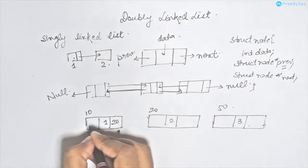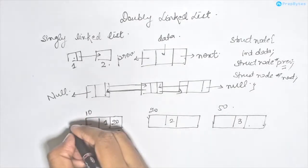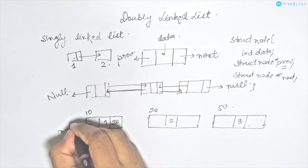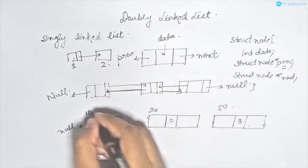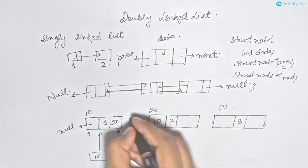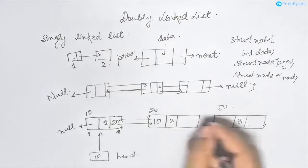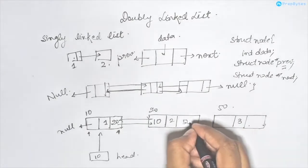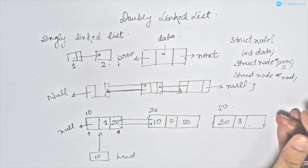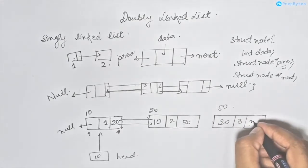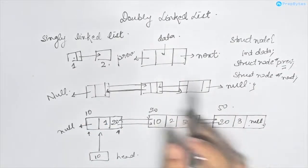So what will the next pointer of the first node have? 20. Since this is the first node, it has no previous element, so it will have null as the previous pointer. The previous pointer of the second node will be 10, and the next pointer of the second node will be 50. The previous pointer of the third node will be 20, and since this is the last node, its next pointer will be null. So this is how a doubly linked list looks.